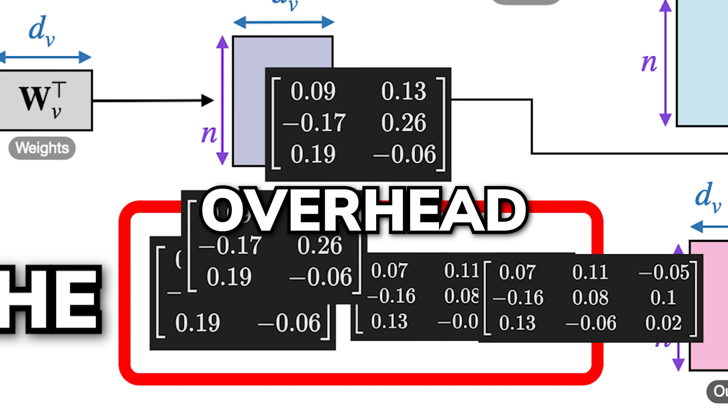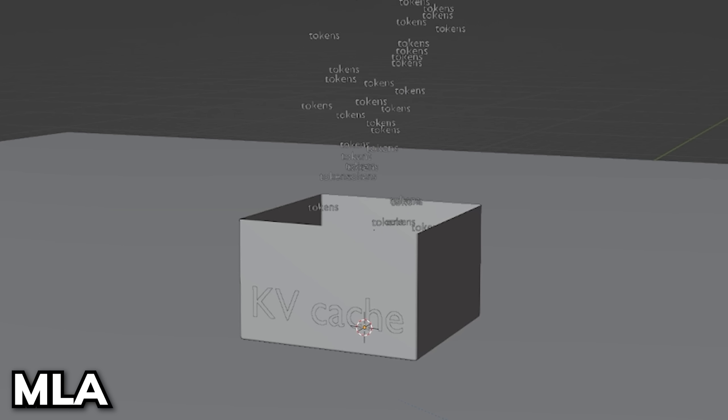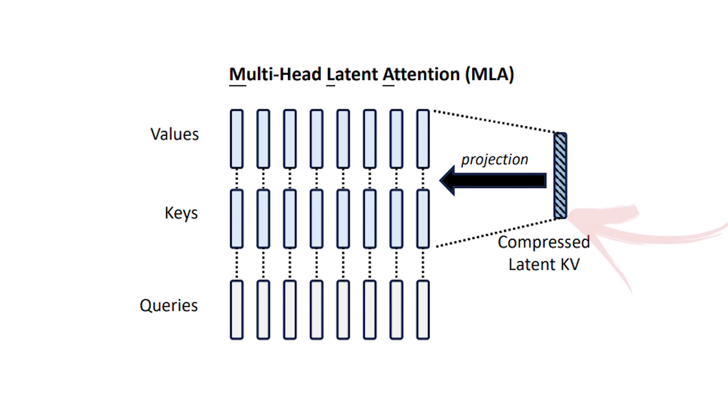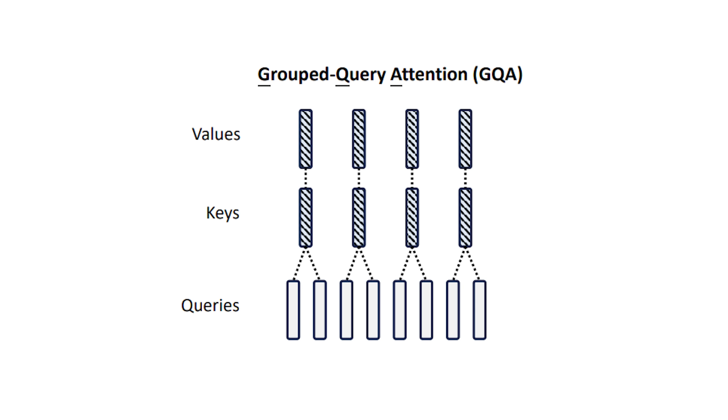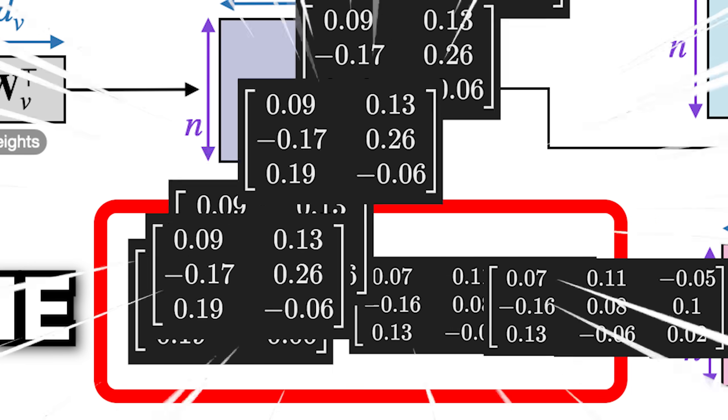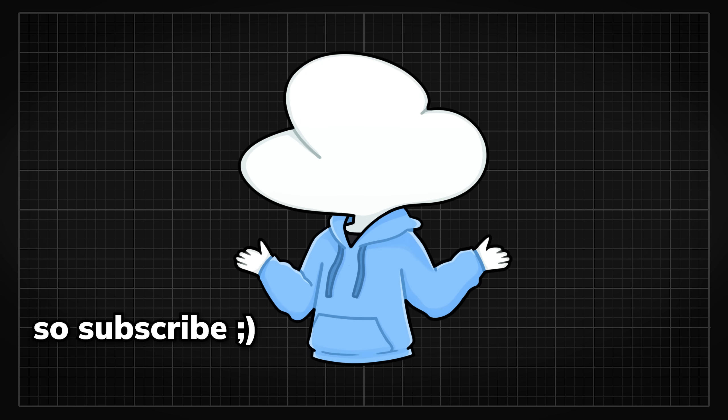Anyways, MLA's advantage is the fact that the overhead of attention remains mostly constant regardless of context length, unlike GQA, which slows down as more text is added. But tuning the compression is still more complex compared to the straightforward grouping used in GQA. There is currently also a lot of research focused on compressing or speeding up the KV cache, so maybe I'll cover that more in depth in another video.